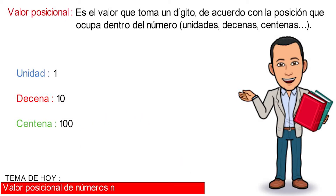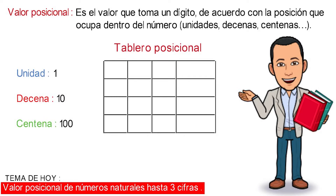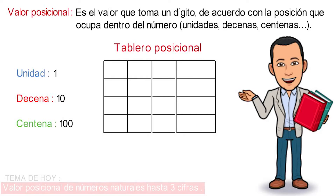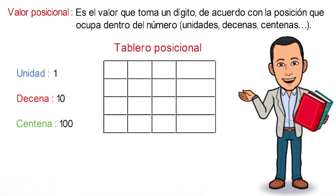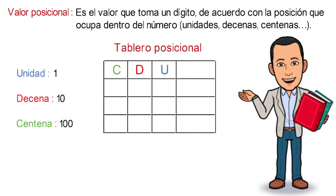Next, we will see some examples in the position table, where we will begin by identifying the column of the units, the column of the tens, the column of the hundreds, as well as the column to write the number.